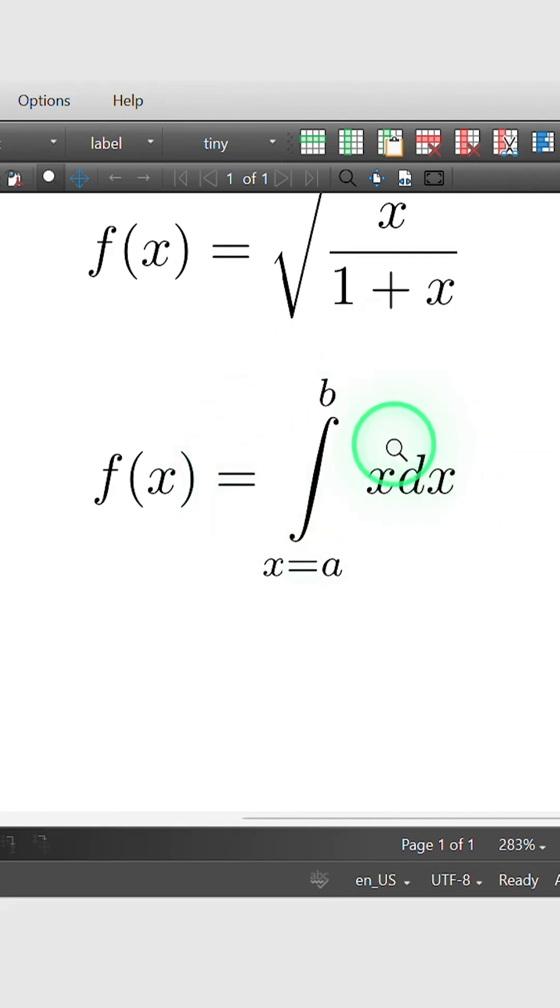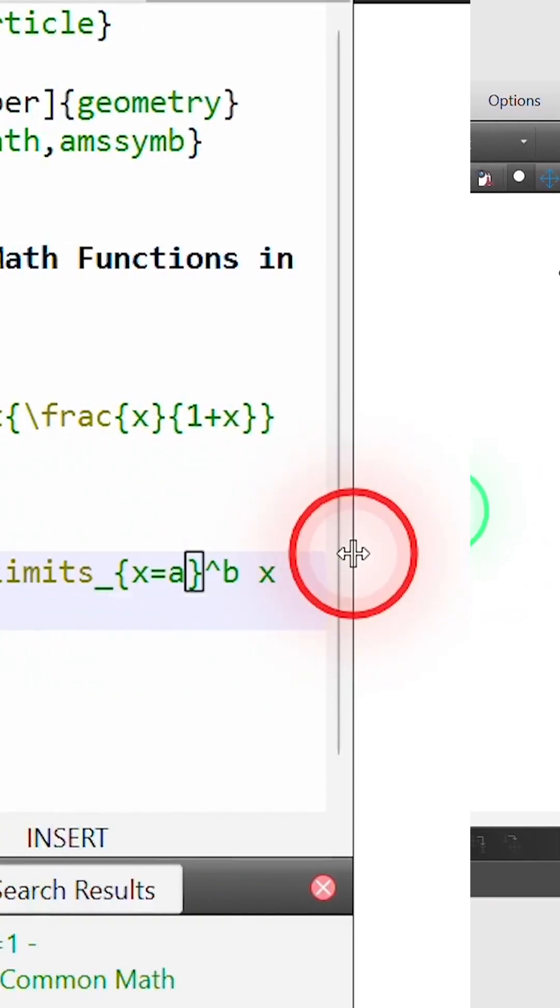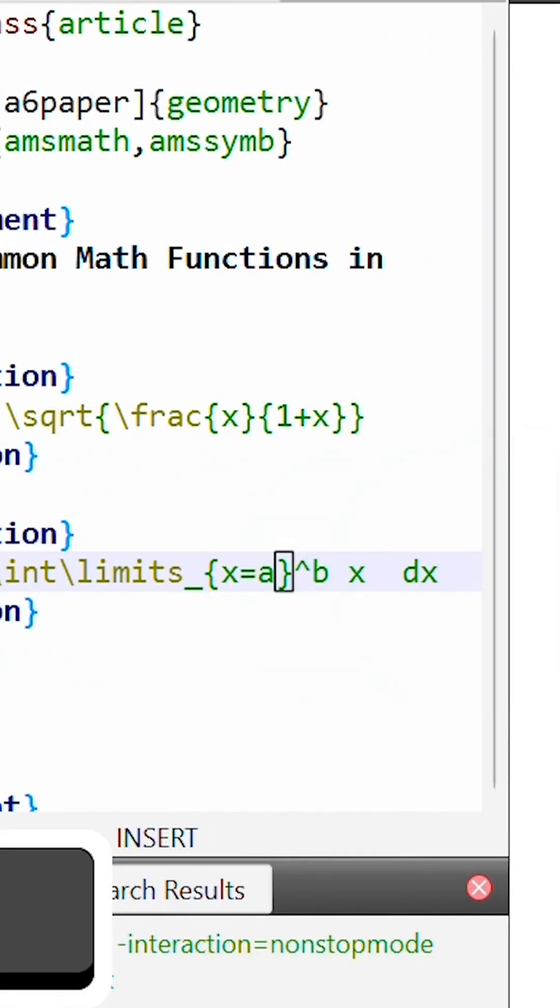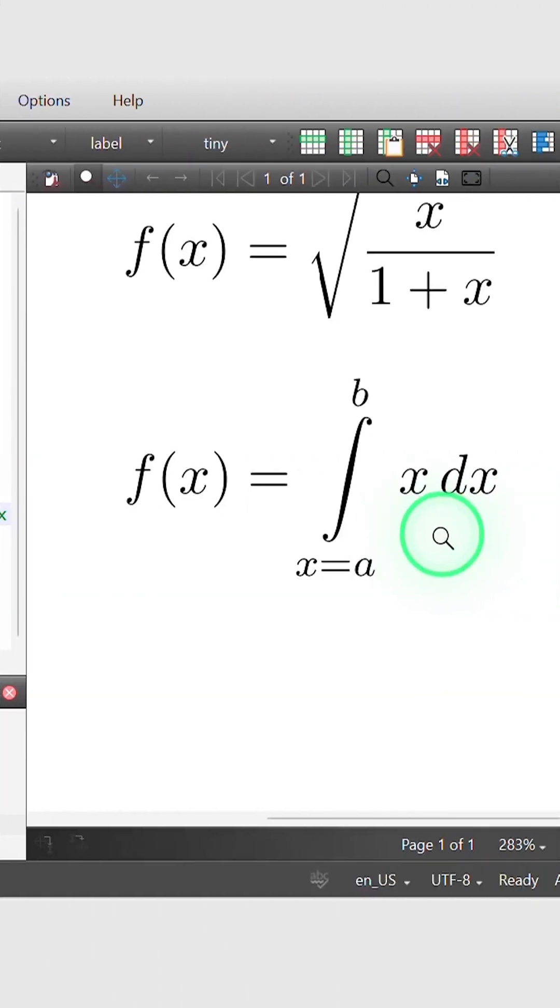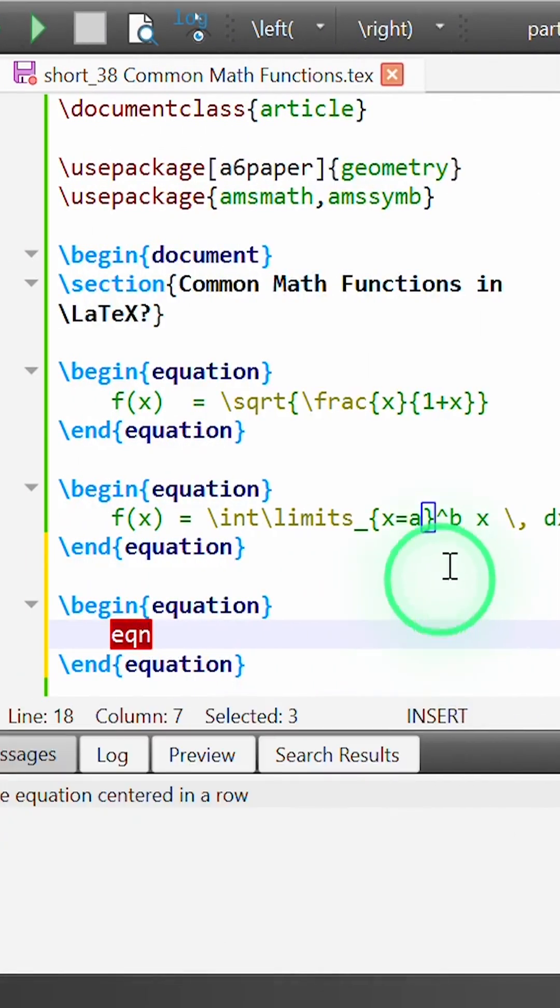Another thing I might do here is add a little bit of space between the x and the dx, and I can do that with the command \, to add a thin space. As a result we get a thin space between x and dx.